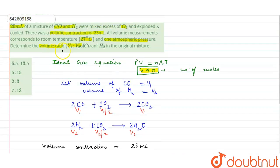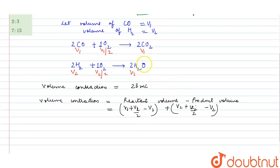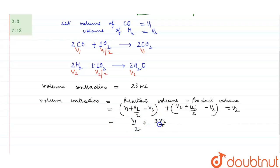It is stated that after passing through excess oxygen, the mixture is exploded and cooled. So water converts into liquid state, meaning there is also a reduction in volume due to water. Therefore V2 is also fully removed. The total reduction in volume equals V1/2 + 3V2/2, which is equal to 23 ml.